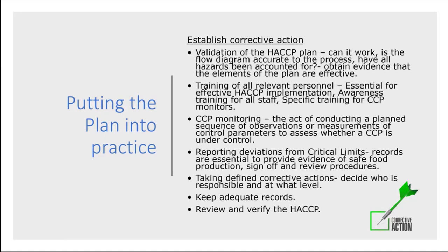We must ensure that we train all of our relevant personnel — it's essential for the effectiveness of the HACCP to be implemented. We must be able to provide evidence of awareness training and any specific responsibilities that people have for critical control point monitoring. They need to receive that training so they're aware of their responsibilities and the implications if they don't follow this. We also have to think about how we plan the sequence of observations, measurements under certain control parameters, and evidence on how that is recorded to show these critical control points are staying within our criteria.